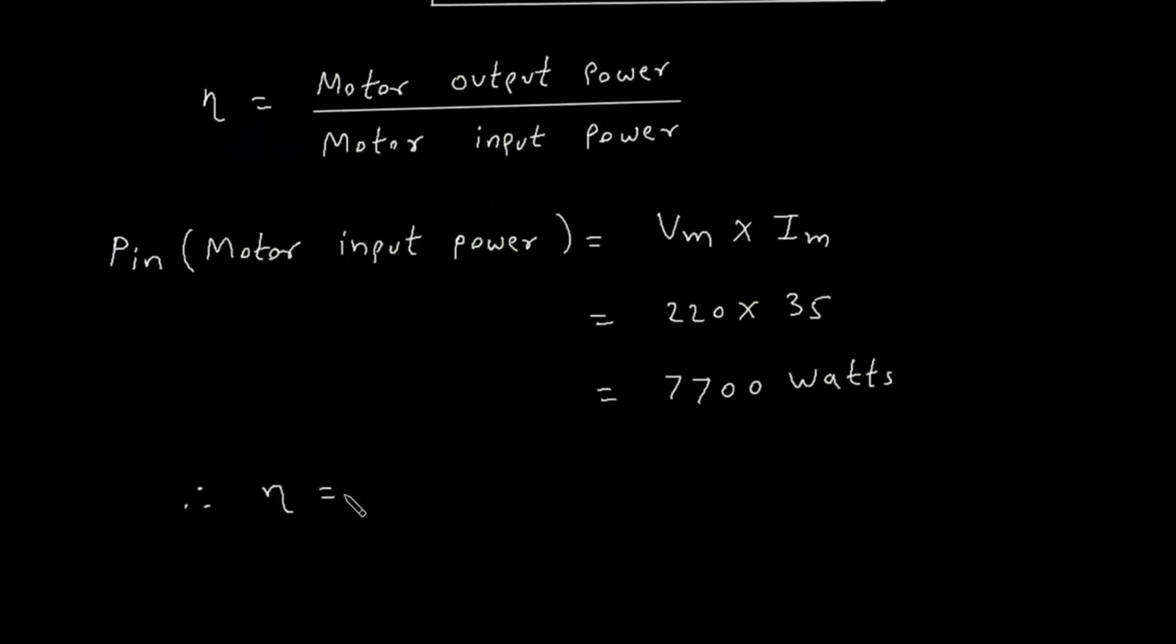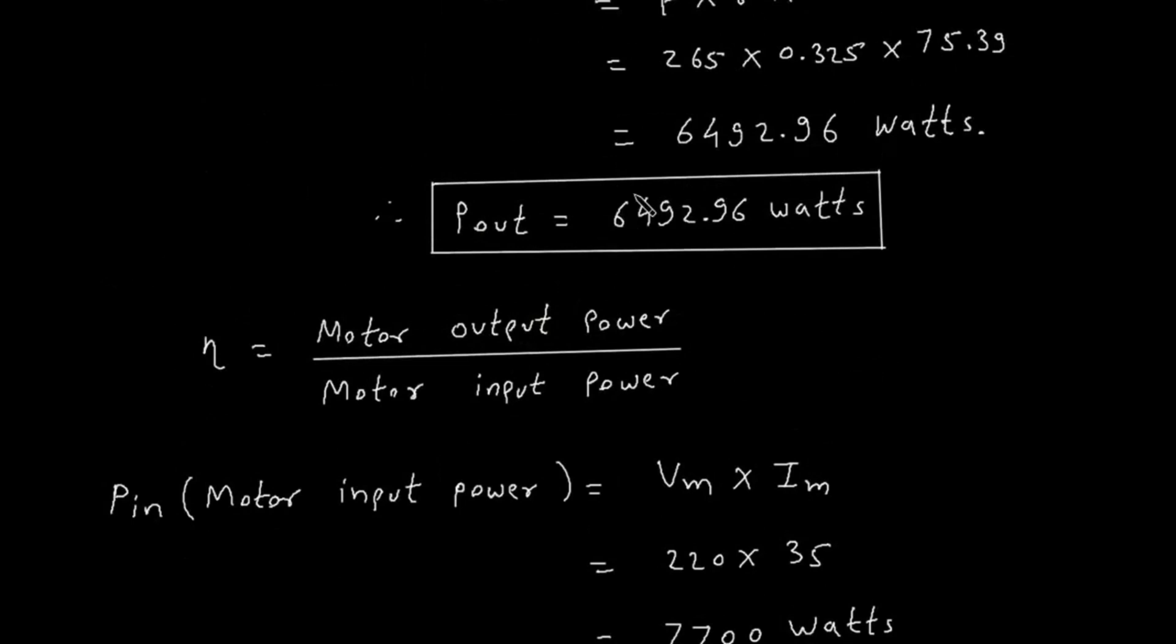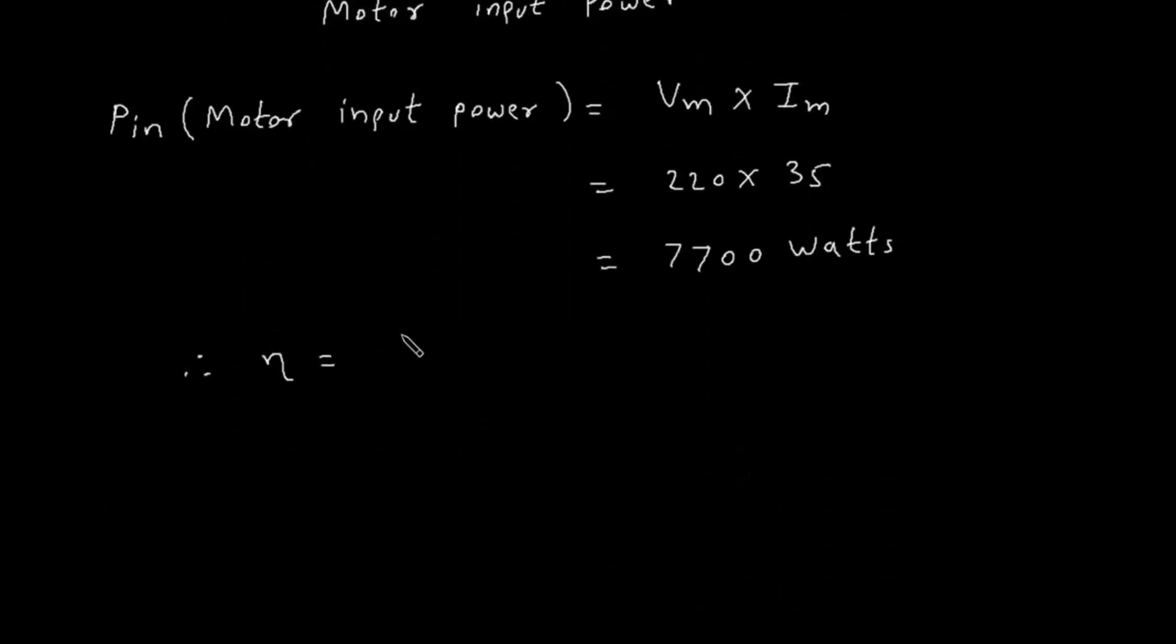Therefore, efficiency equals 6492.96 divided by 7700 watts. In percentage, it will be multiplied by 100.